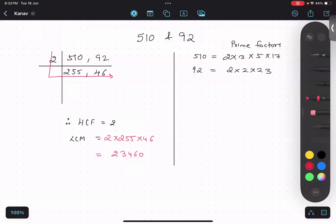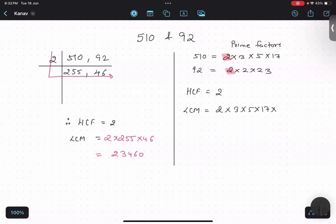So if you see, common is this: 2. So HCF is 2 and LCM is, I will take the common ones and rest of them: 2 times 3 times 5 times 17 times 2 times 23.